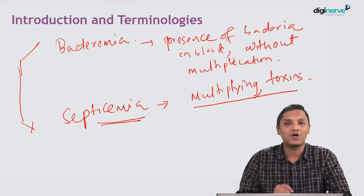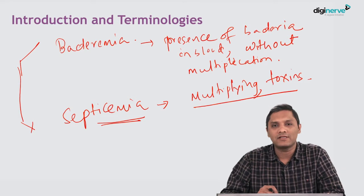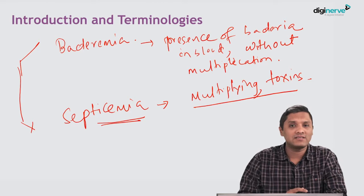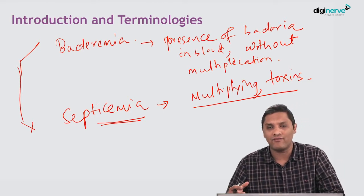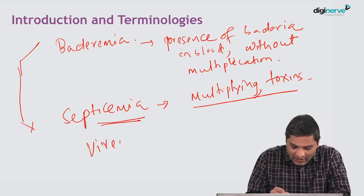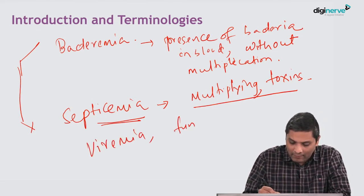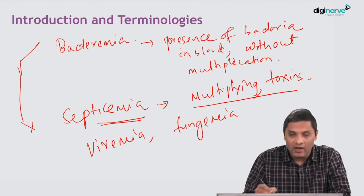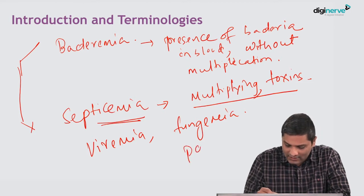Septicemia means the presence of organisms followed by their multiplication and production of toxins, leading to serious consequences. Don't think that bloodstream infection is only mediated by bacteria. There are viruses, parasites, and fungi that can also invade the bloodstream. Accordingly, they are called Viremia — presence of virus in blood — Fungemia — presence of fungus in blood — and Parasitemia — presence of parasites in blood.